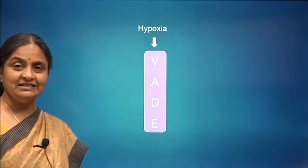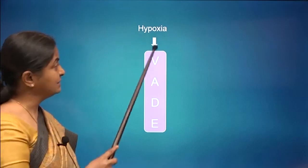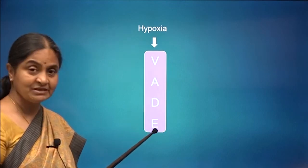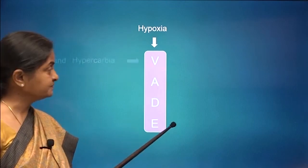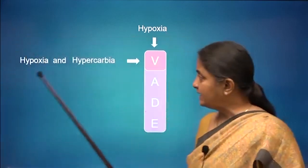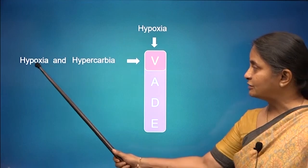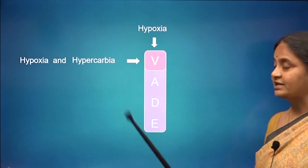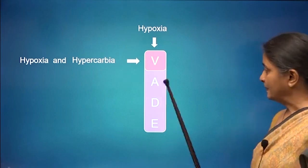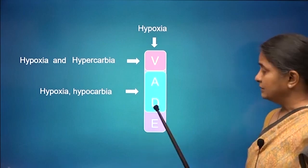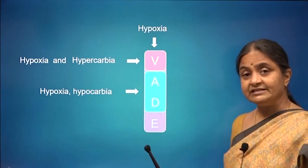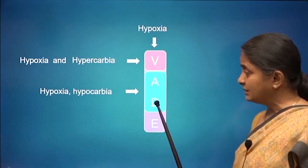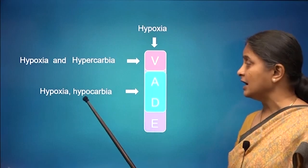Analyzing these conditions: hypoxia occurs in ventilatory impairment, atmospheric hypoxia, diffusion impairment, and extra-pulmonary shunt. Of these, only in ventilatory impairment is hypoxia associated with hypercapnia — this is what we refer to as type 2 respiratory failure. Whereas in atmospheric hypoxia and diffusion impairment, the lungs are normal and the hypoxia will stimulate ventilation, resulting in even hypocapnia.